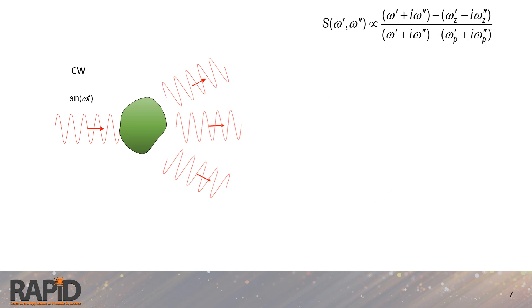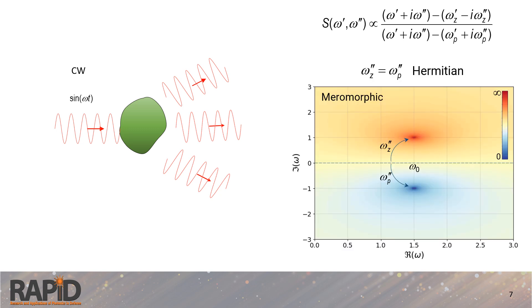Under certain mathematical conditions, we can analytically continue this response function into the complex frequency plane, which includes both real and imaginary components, as shown here. In this extended plane, we encounter two distinct features known as poles and zeros. This arises because the response function is a meromorphic function, meaning it has both a numerator and denominator. If the imaginary frequencies of the poles and zeros are equal, the system is considered Hermitian, meaning it obeys time reversal symmetry. On the other hand, if these imaginary frequencies differ, the system is non-Hermitian and it does not adhere to time reversal symmetry.